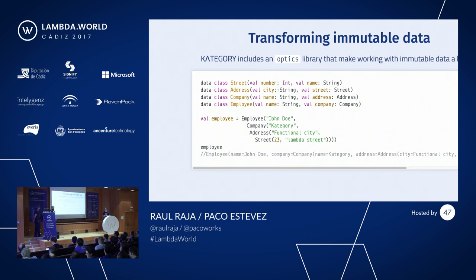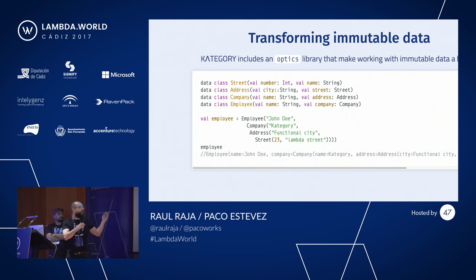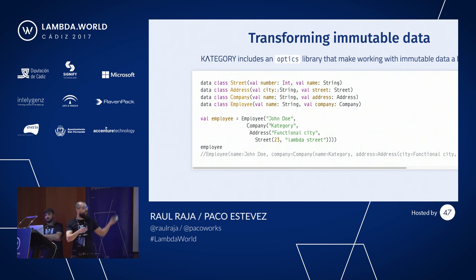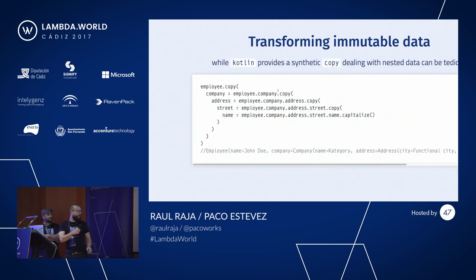We heard a lot about optics already at this conference, and Kotlin favors immutability, as functional programmers also favor. Let's see a simple example. We have a couple of data structures — product types. An Employee has a Company, a Company has an Address, an Address has a Street. We can create an Employee by nesting the construction, which is pretty straightforward. But what happens if you want to update this structure?